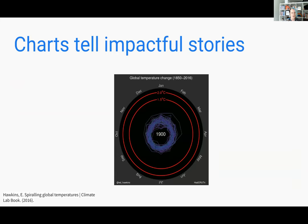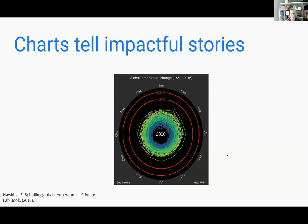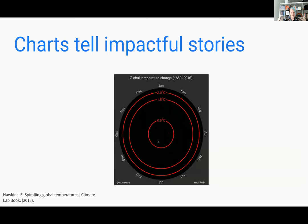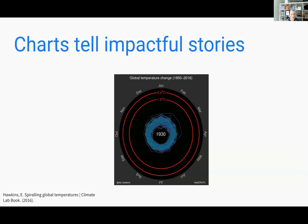Data visualizations also allow us to tell impactful stories in new ways. This is climate change data — an alternative to the hockey stick graph. We have global temperature average per month over time, coming out from the center in a spiral. It's a really dramatic way to tell a story we've been trying to tell in many ways before. Data visualizations allow us to tell impactful stories in unique ways.